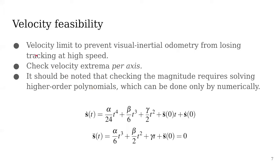We also impose velocity-feasibility constraints to limit the velocity. Basically, this is to prevent visual-inertial odometry from losing tracking at higher speeds. We check velocity extrema per axis. Specifically, we take the derivative of our primitive polynomial trajectory to obtain the velocity expression, and we take the derivative again to find the extrema of the velocity.